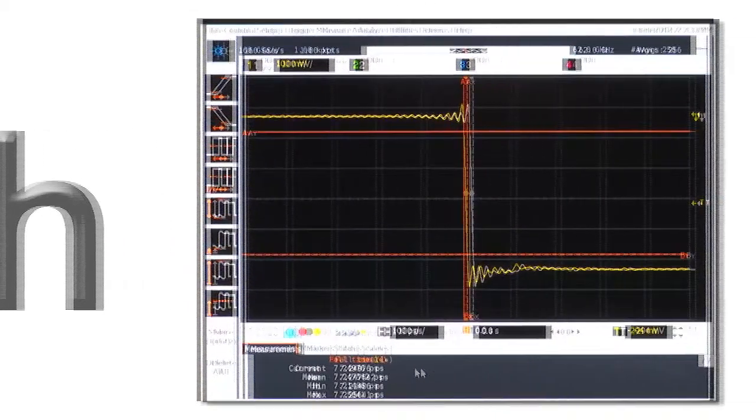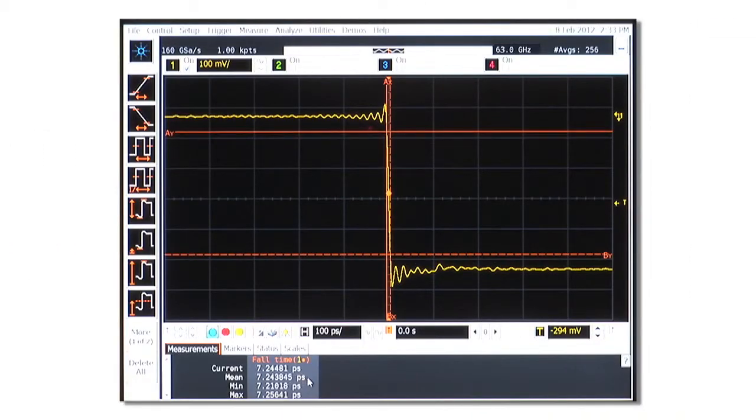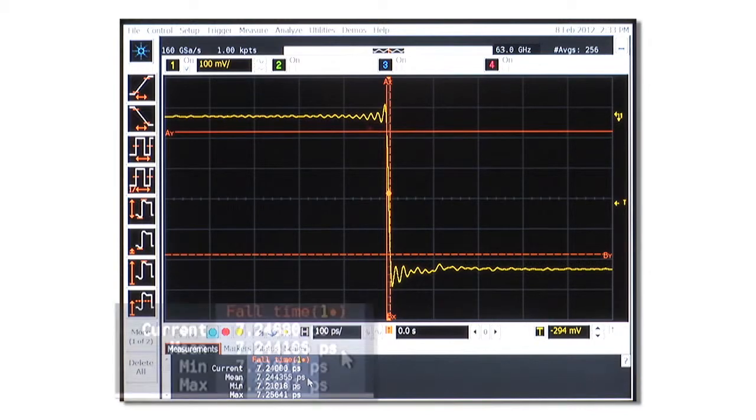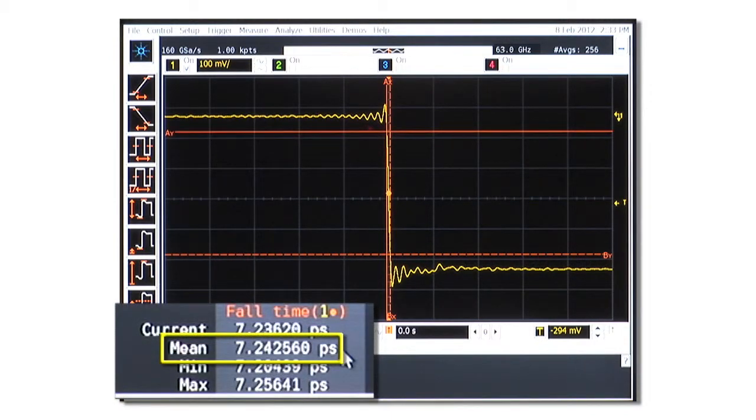What kind of rise time can you measure with a full 63 GHz of bandwidth? We've set up a rise time measurement using the calibration output of the scope and Agilent's new N2807A ultra-fast pulse generator, which accelerates the cal out edge to 7 picosecond rise times.